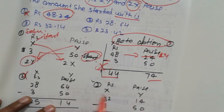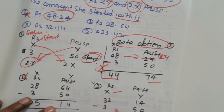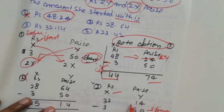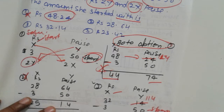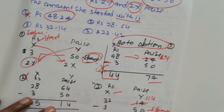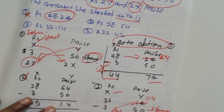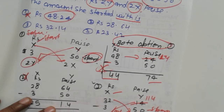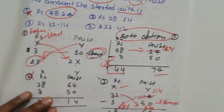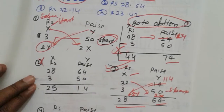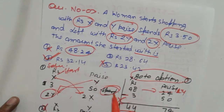Third option: x = 32 and y = 14. Spending 3.50 gives 114 minus 50, resulting in 28 rupees and 64 paise. This is 2y and 2x, so it follows the rule. Option number 3 is correct.